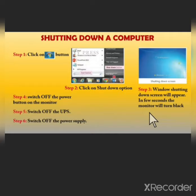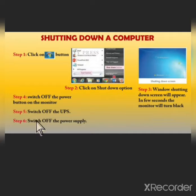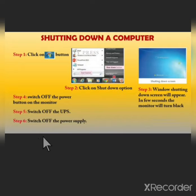Step 3: the Windows shutting down screen will appear, and in a few seconds the monitor will turn black. Step 4: switch off the power button on the monitor. Step 5: switch off the UPS. Step 6: switch off the power supply. And that's it — you are done shutting down a computer. Allah Hafiz students, I hope you all enjoyed the video.